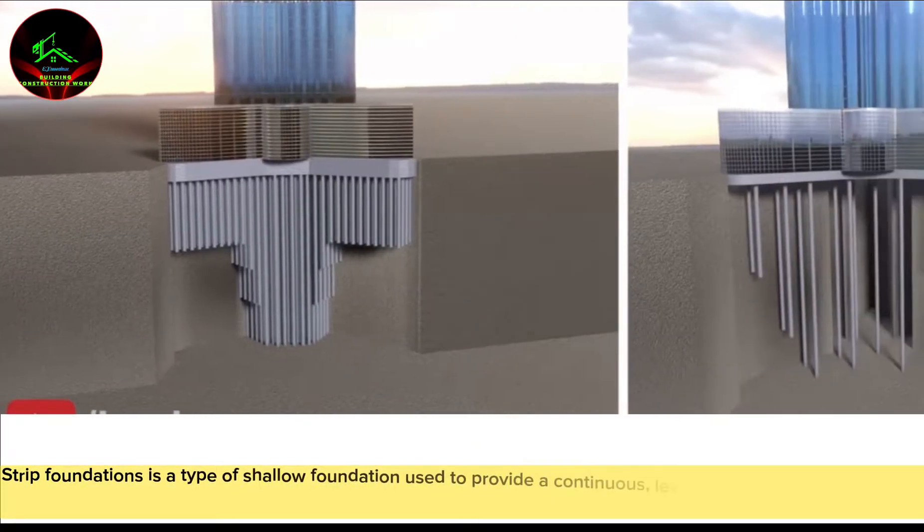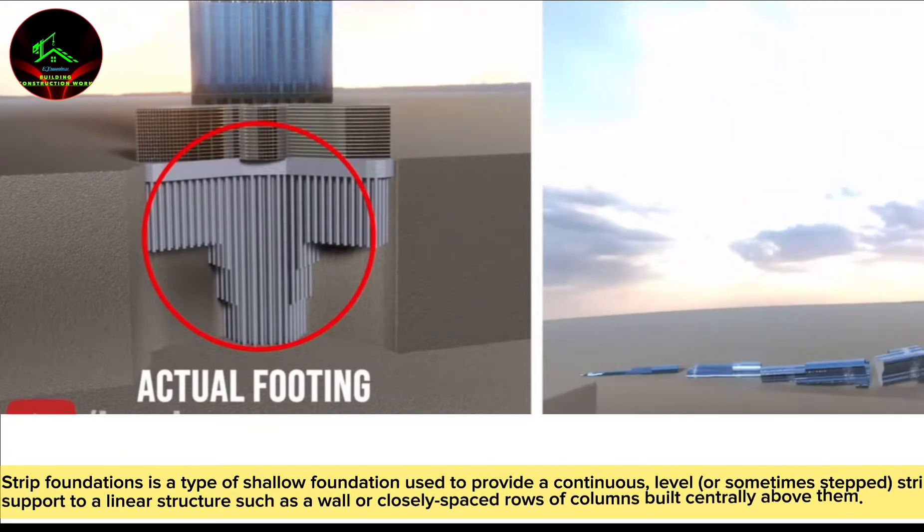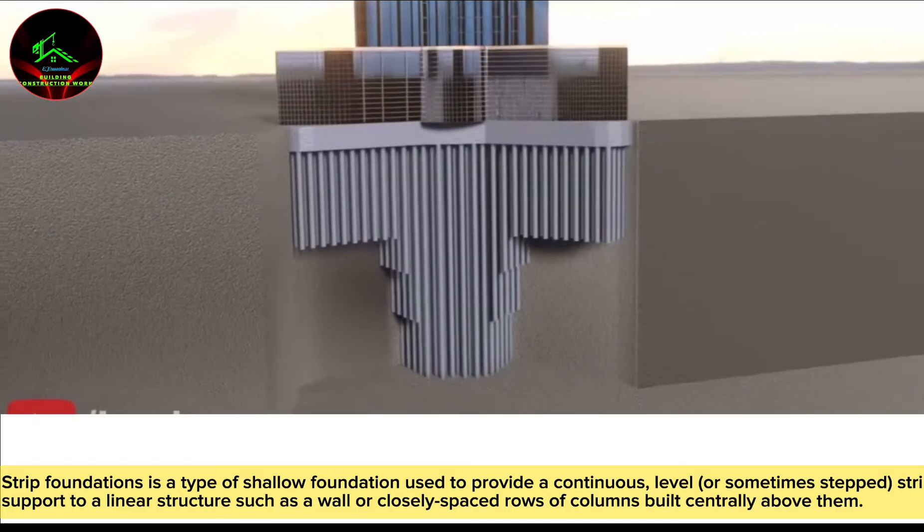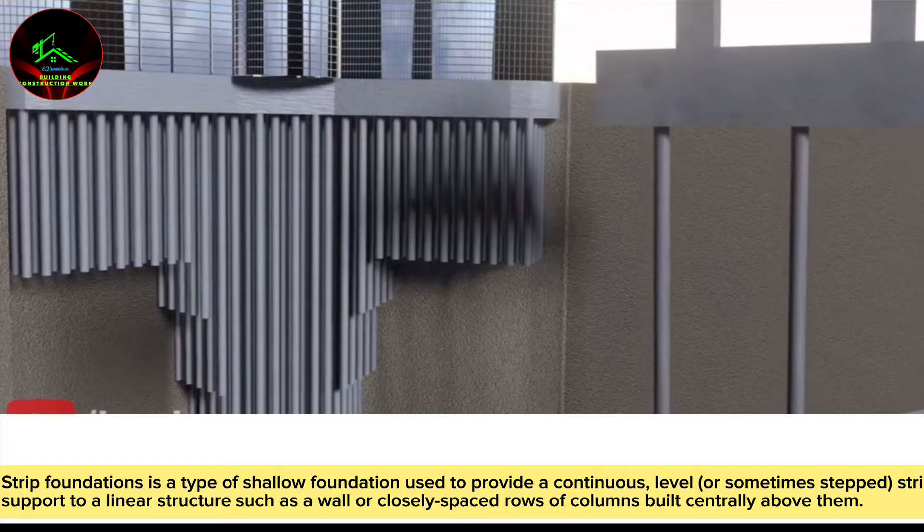Strip foundations is a type of shallow foundation used to provide a continuous, level or sometimes stepped, strip of support to a linear structure, such as a wall or closely spaced rows of columns built centrally above them.